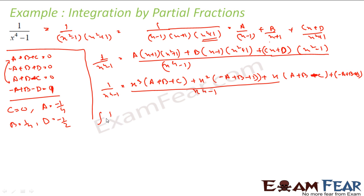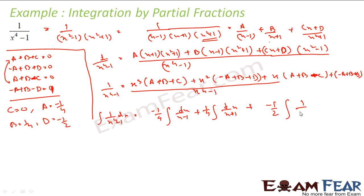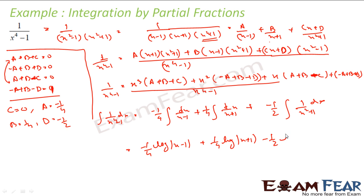So now I can write the integral of 1 by (x to the power 4 minus 1) dx as: minus 1 by 4 integral of 1 by (x minus 1) dx plus 1 by 4 integral of 1 by (x plus 1) dx, plus the term with d. Integrating, the first term gives minus 1 by 4 log of (x minus 1), the second gives 1 by 4 log of (x plus 1), and the third gives a tan inverse term. Taking 1 by 4 as common, this becomes 1 by 4 log of (x plus 1) by (x minus 1) minus 1 by 2 tan inverse x.